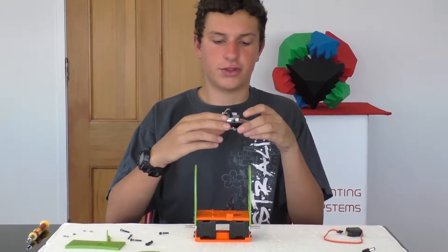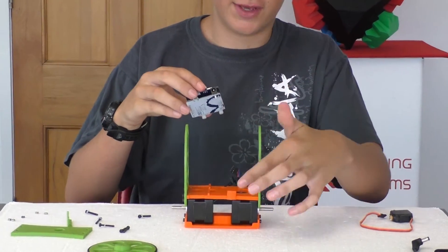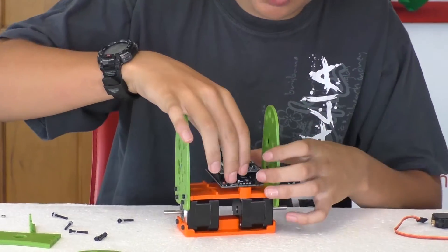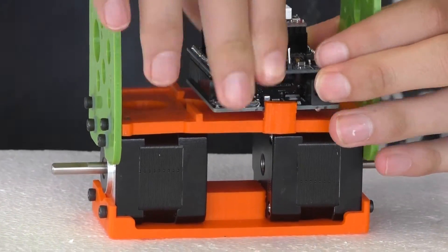Now, we're going to attach the Arduino to the second floor. Make sure that the power socket is facing the big clip. Tuck it into the clip first, and then at the back, you'll see that the nylon hooks fit in perfectly.